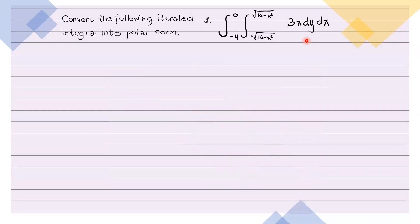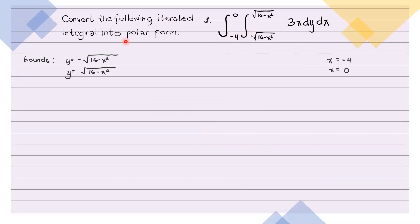So dito, ang gagawin natin ay tignan yung inner integral. Ang inner integral ay with respect to y, so ibig sabihin nito, ito ay mga bounds na ang ibigay ay expression for y. We have the bound y equals negative square root of 16 minus x squared, and the bound y equals square root of 16 minus x squared. Then yung outer integral naman natin ay with respect to x. So we have x equals negative 4 and x equals 0.